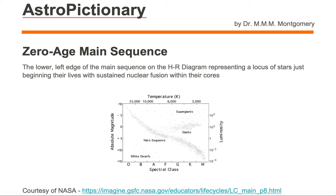Zero age main sequence is the lower left edge of the main sequence on the HR diagram, representing a locus of stars just beginning their lives with sustained nuclear fusion within the cores. Now what does this mean? Let's focus on this main sequence of the HR diagram and this definition first.